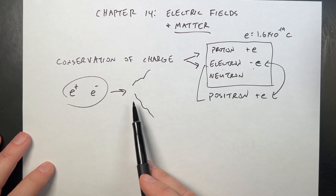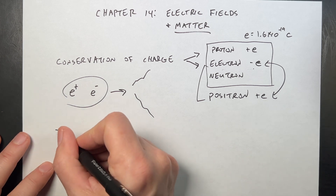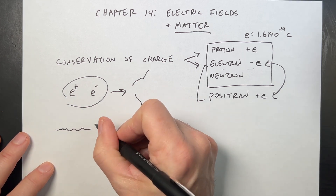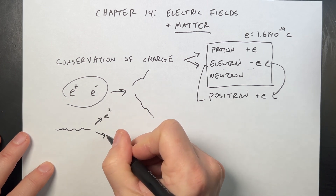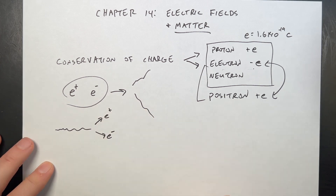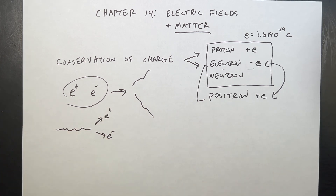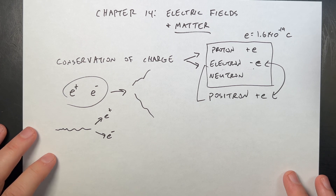The same thing is true in reverse with pair production: you can have light produce a positron and an electron. Again, no charge before, no charge after — charge is conserved. So we can't just make charge. I don't know why; that's just the way it is.